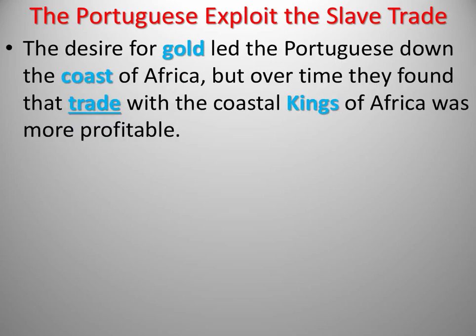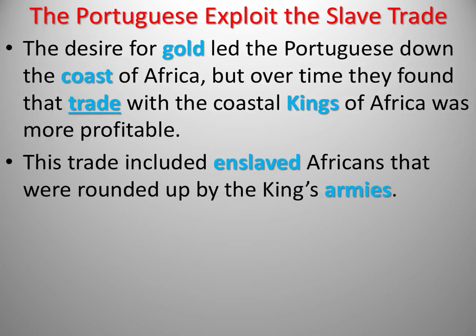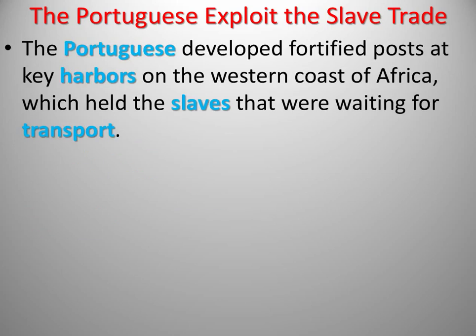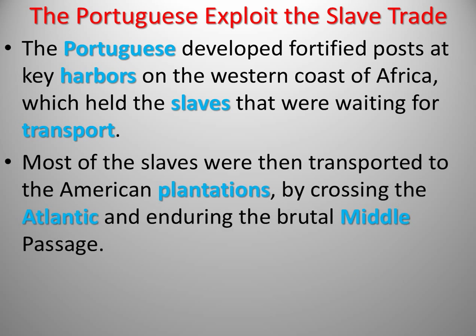The Portuguese would be the ones to exploit the slave trade. They went down the African coast and over time found that trade with the kings was far more profitable than trying to take the land from them. This trade did include enslaved Africans that the kings' armies rounded up — Africans enslaved other Africans. That's an important concept: it was not a white-versus-black thing; it was strictly about power, money, and greed. The Portuguese developed fortified outposts at key harbors along the African coastline, and the kings built great empires around those. Slaves brought in from the interior of Africa were transported across the Atlantic to serve in America. Most slaves were transported to the plantations after the kings took the ones they wanted and used them as they saw fit.